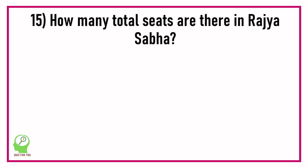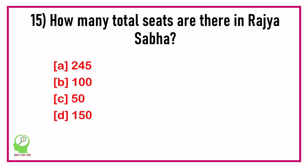Question number fifteen: How many total seats are there in Rajya Sabha? Options are: 245, 100, 50, 150. Answer: 245.